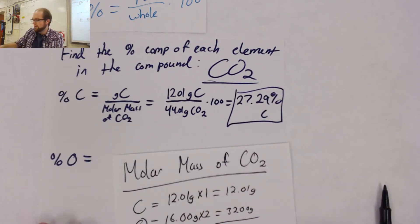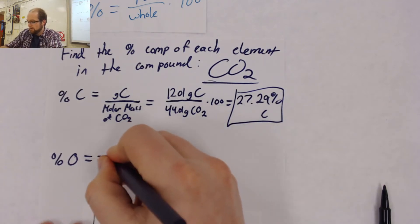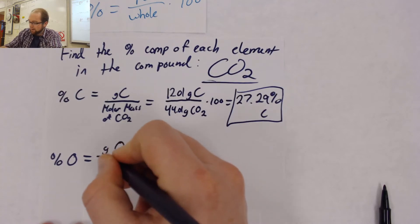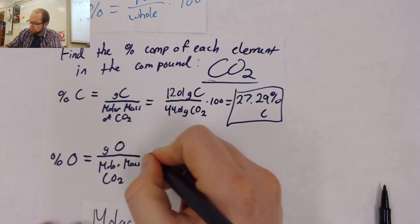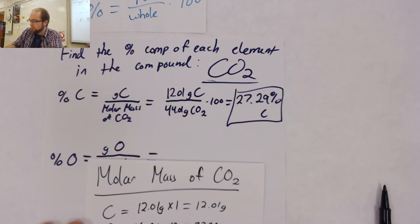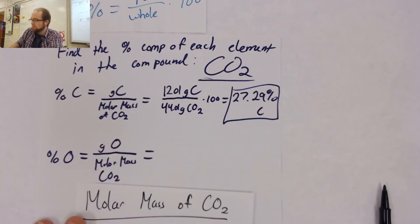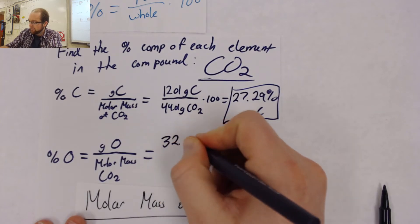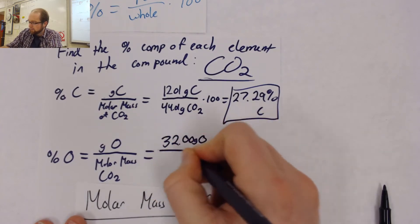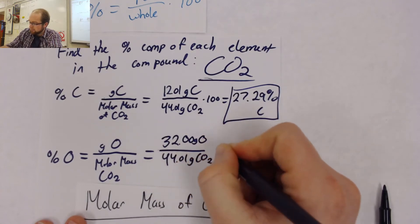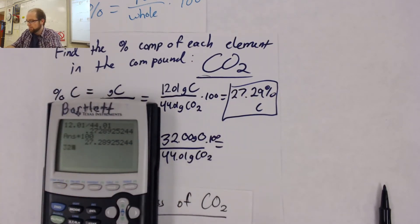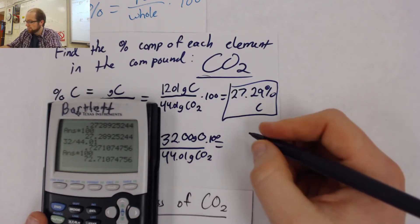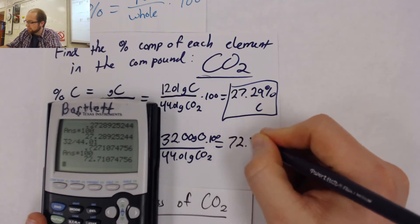The good thing is, since we've already set everything up, we can do the same thing for our oxygen. Except instead of grams of carbon on the top, we're going to take grams of oxygen divided by the molar mass of CO2. Remember that since we had two oxygens, we're going to need to include all 32 grams of oxygen that were present that make up our CO2. So we can find our final answer. Don't forget to multiply by that 100 and turn your decimal into a percent. 32 divided by 44.01 times 100, again keeping those four sig figs, we should end up with 72.71%.